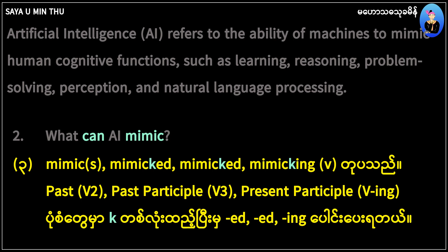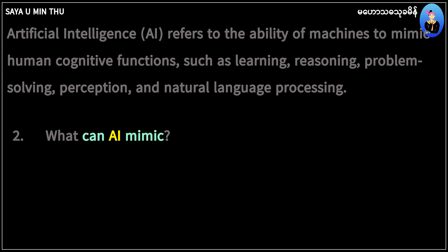The main verb is 'can.' Mimic is in the form of the bare infinitive. AI is the subject. The main verb is 'mimic.'